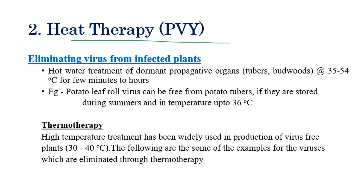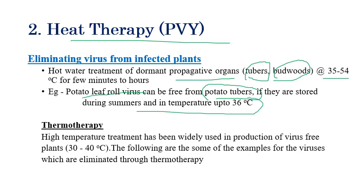Heat therapy is a physical method used to eliminate viruses from propagative stock material. Heat treatment of dormant propagative organs such as tubers or budwoods can eliminate plant viruses at 35 to 54 degrees centigrade for a few minutes to a few hours. For example, potato leaf roll virus can be eliminated from potato tubers stored at 36 degrees centigrade. Thermotherapy using high temperatures of 30 to 40 degrees centigrade is widely used for producing virus-free plants.